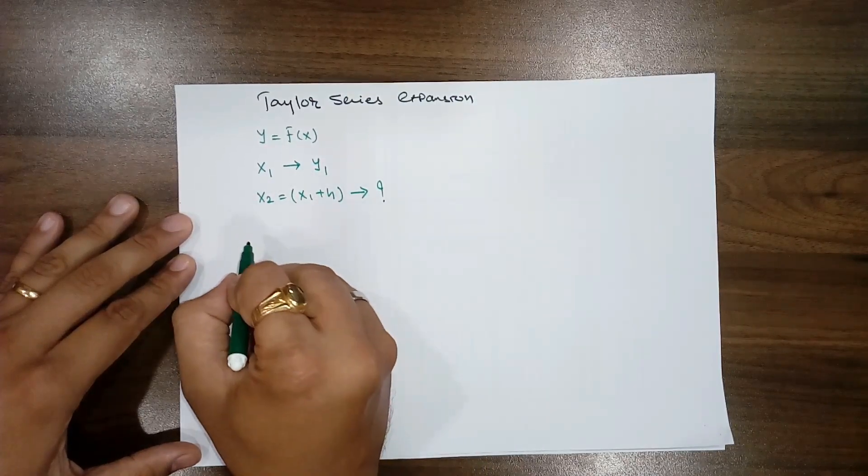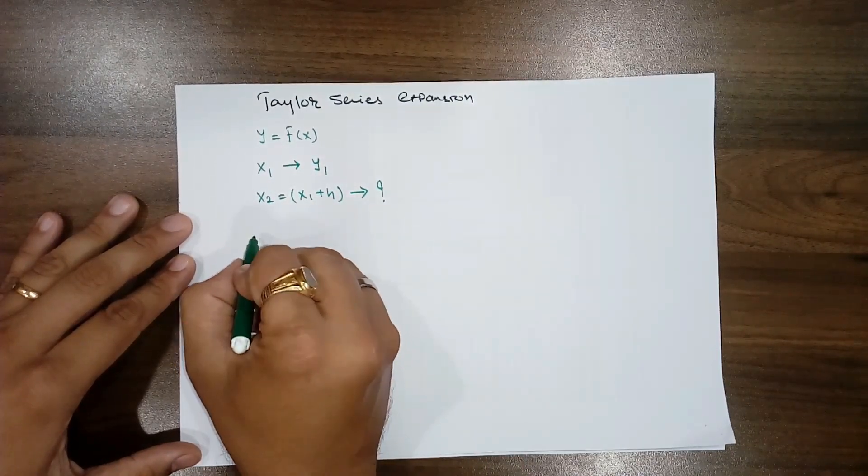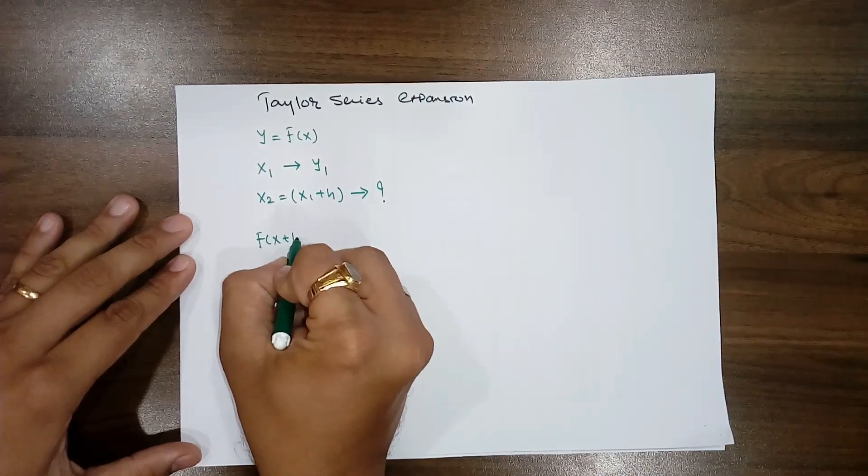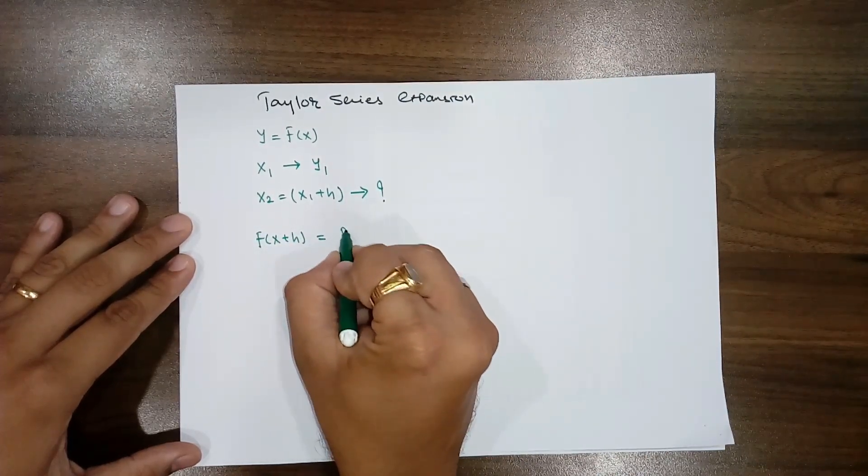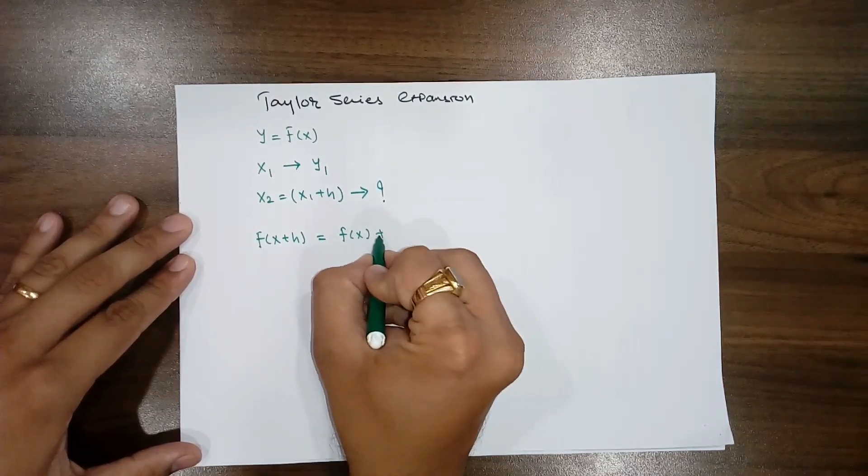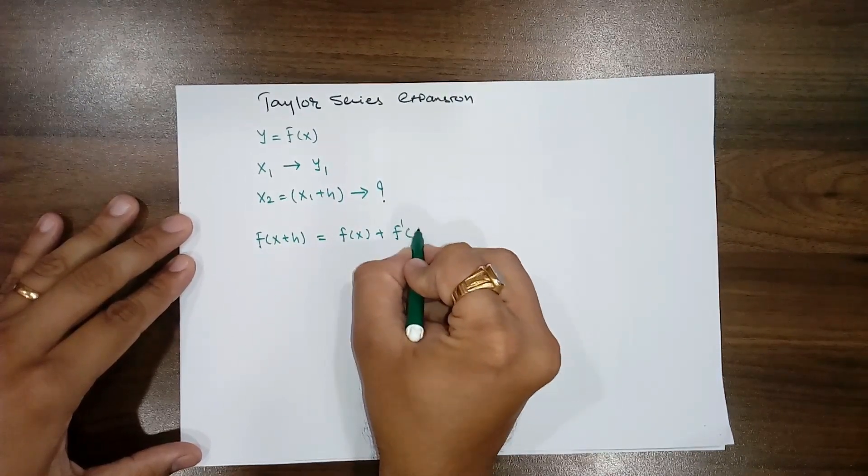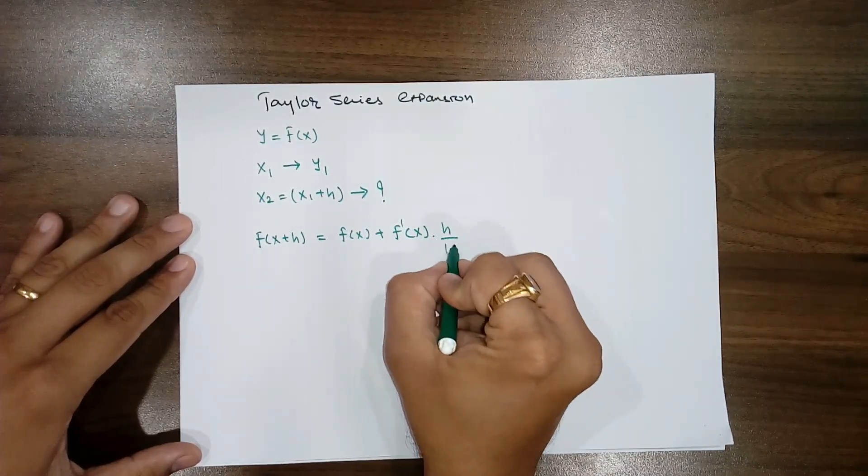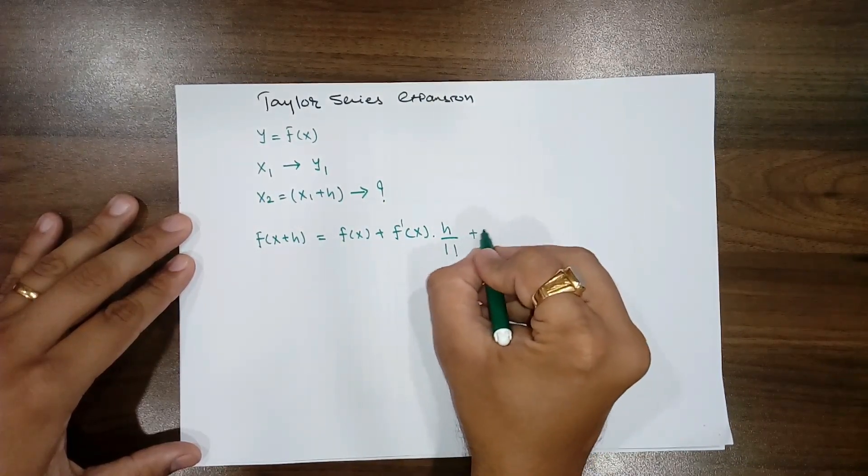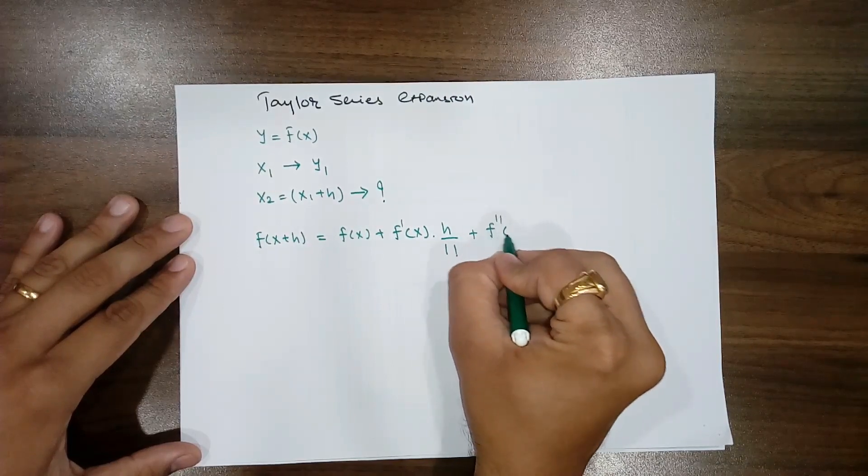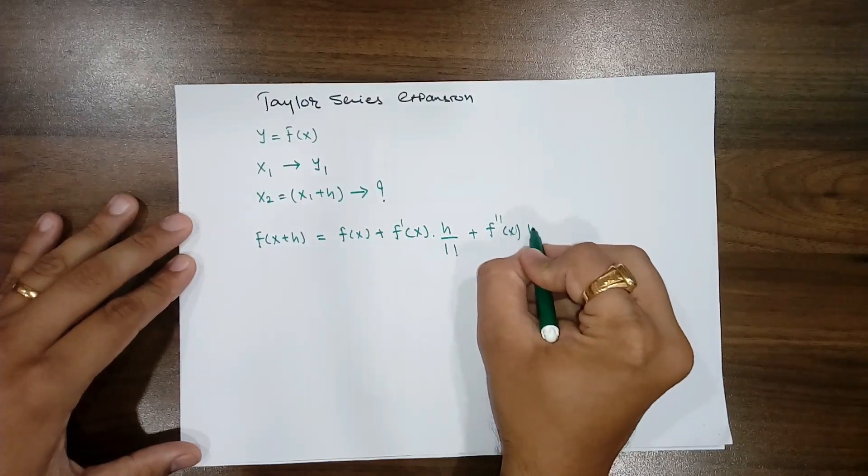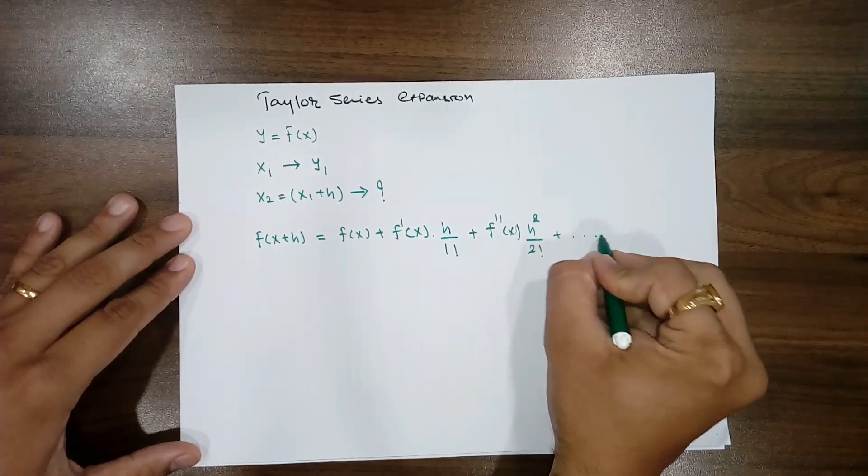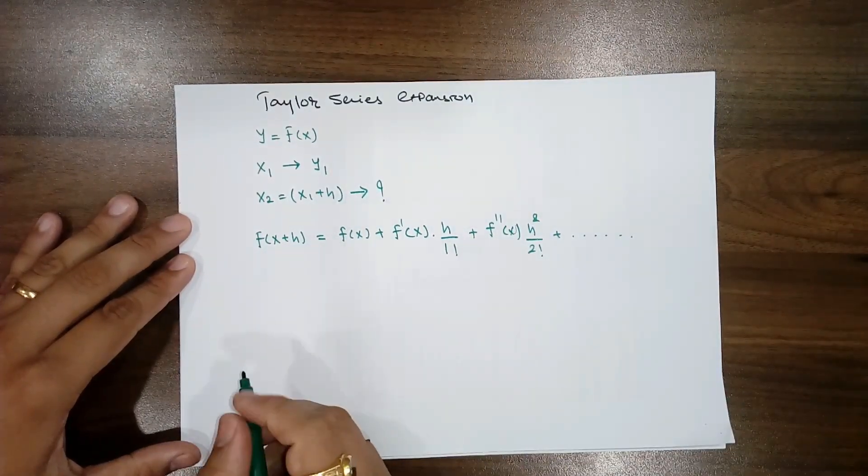Then according to the Taylor series expansion, your functions at x plus h value, it will become f of x plus f prime, the first derivative into h divided by one factorial, plus the second is f double dash x into h square divided by two factorial as is going on up to the nth level.